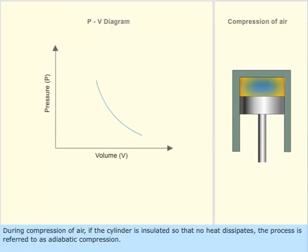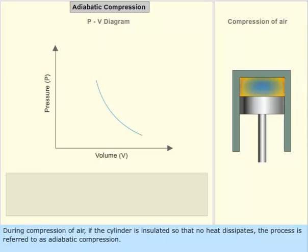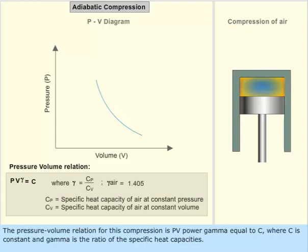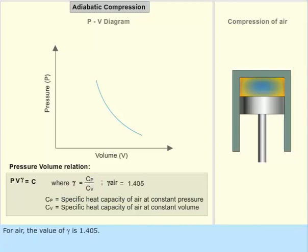During compression of air, if the cylinder is insulated so that no heat dissipates, the process is referred to as adiabatic compression. The pressure-volume relation for this compression is PV power gamma equal to C, where C is constant and gamma is the ratio of the specific heat capacities. For air, the value of gamma is 1.405.